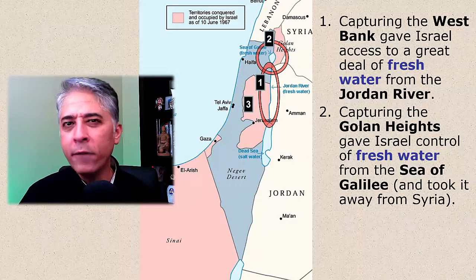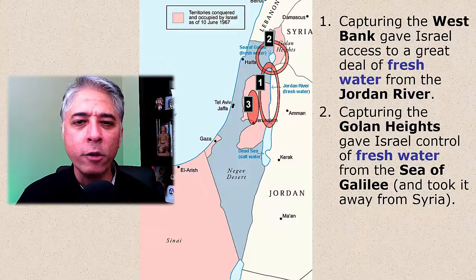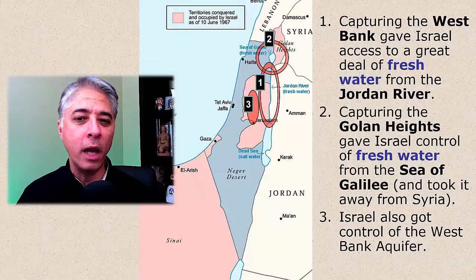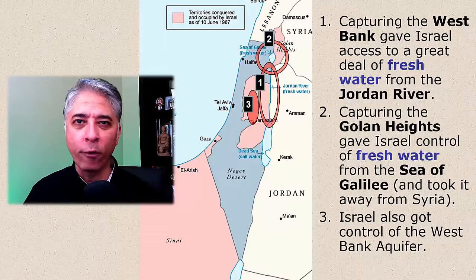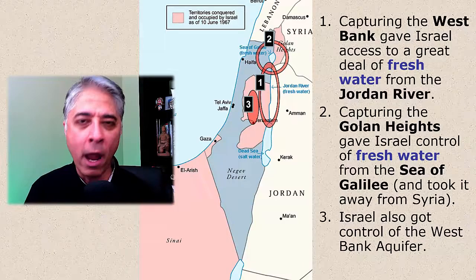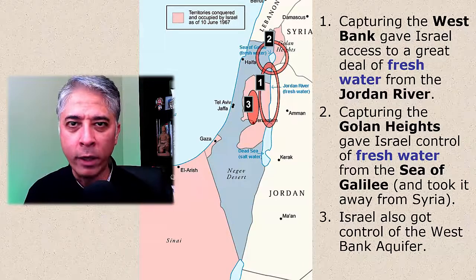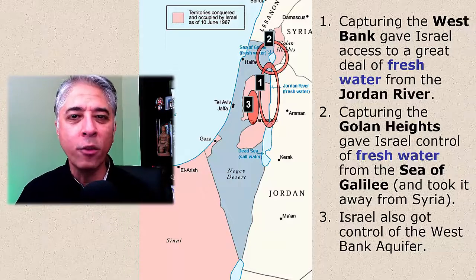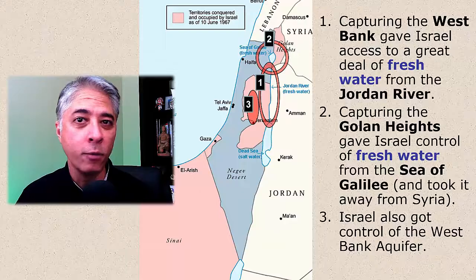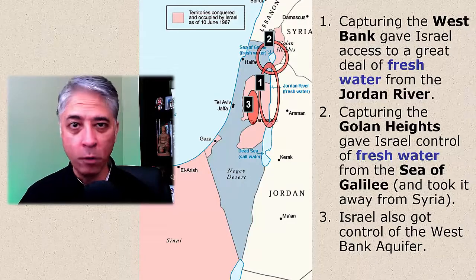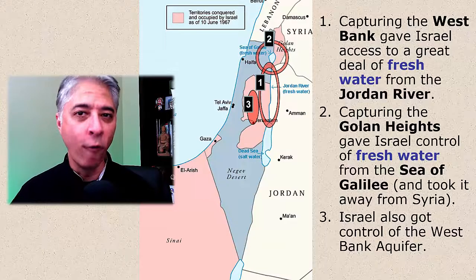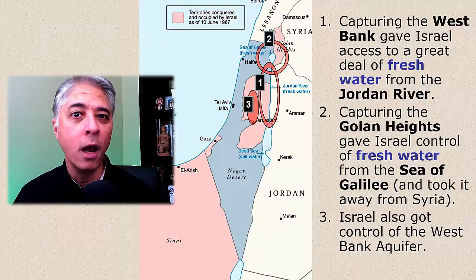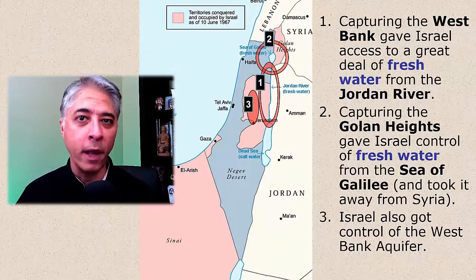Not visible on the map, but location three is the location of the largest aquifer — the largest source of groundwater in the region — called the West Bank Aquifer. By seizing these three areas, the Israelis were able to seize the future of fresh water for their people, and as a result, take that fresh water supply away from their enemies.